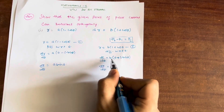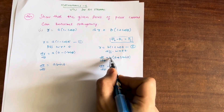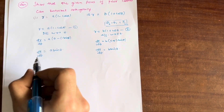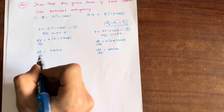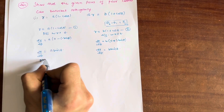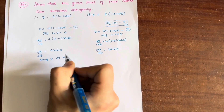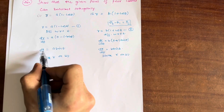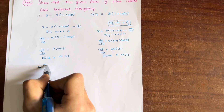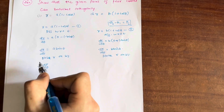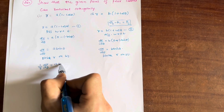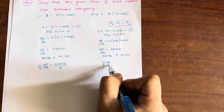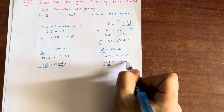Similarly, differentiating the second equation with respect to θ: dr/dθ equals B is a constant, differentiation of 1 is 0, plus differentiation of cos θ is minus sin θ, giving dr/dθ equals B sin θ. Now divide R on both sides of both equations — the reason for this will become clear shortly. So 1/R · dr/dθ equals A sin θ divided by R, and 1/R · dr/dθ equals B sin θ divided by R.